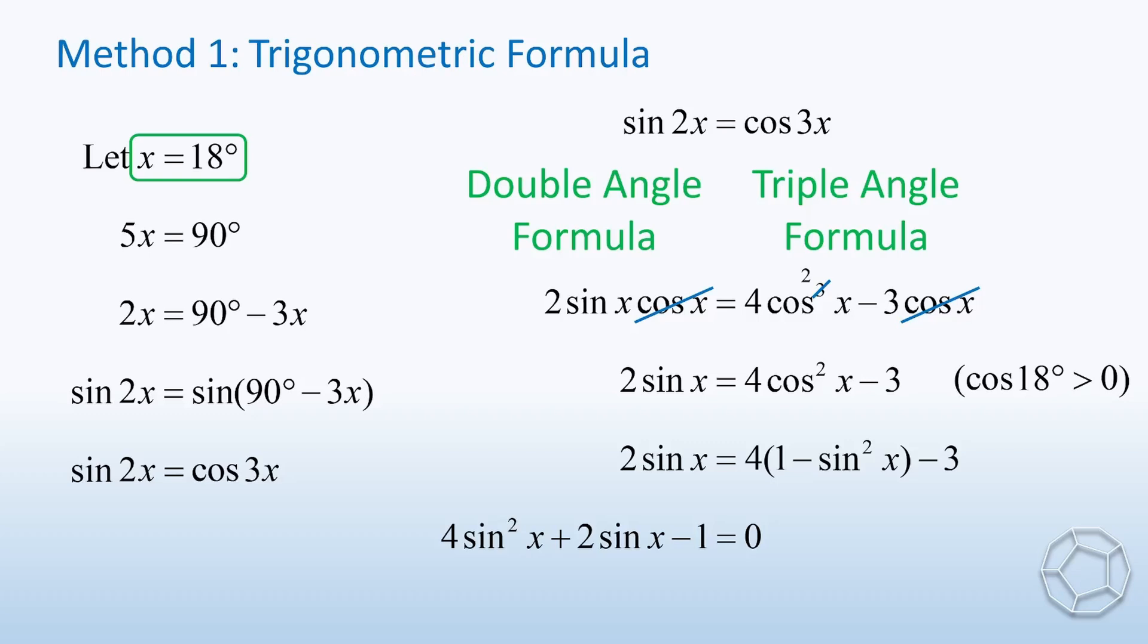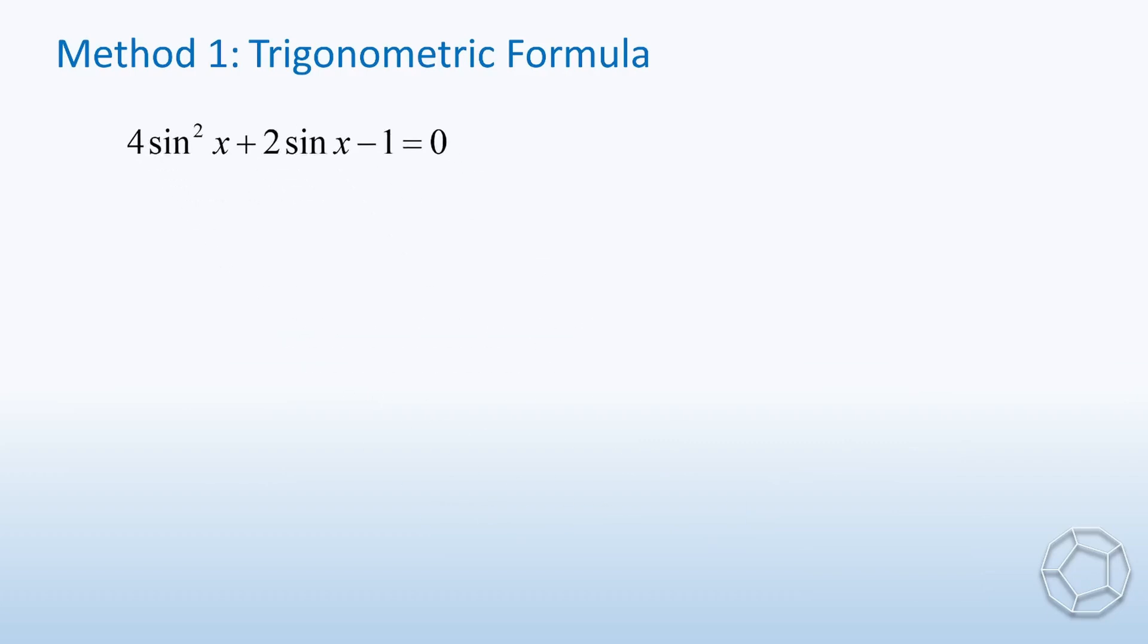This equation can be solved by the quadratic formula. However, let me show you the algebra trick. Now, divide the whole equation by 4 and put 1 over 4 to the right-hand side. Then, we're going to make use of the completing square method.